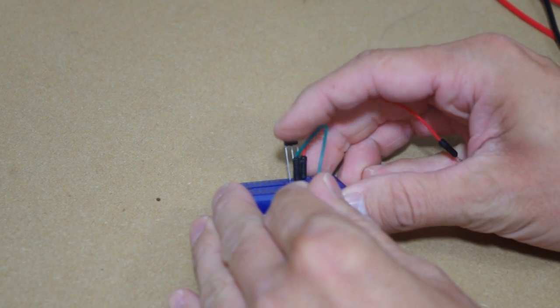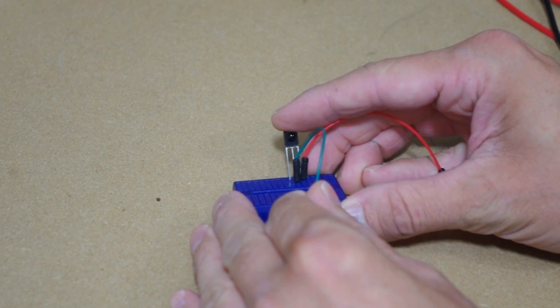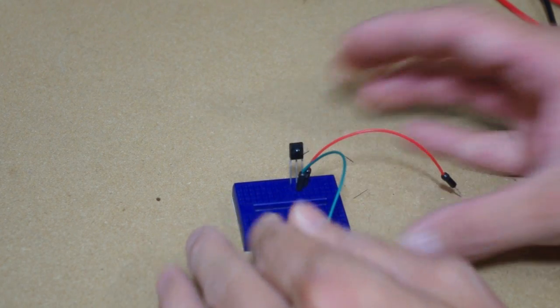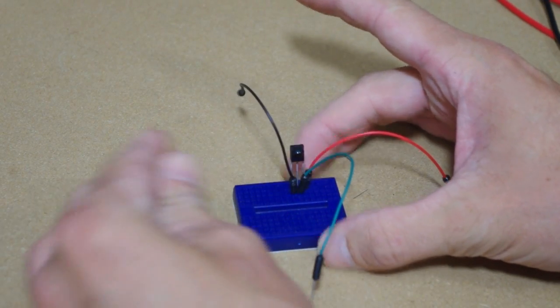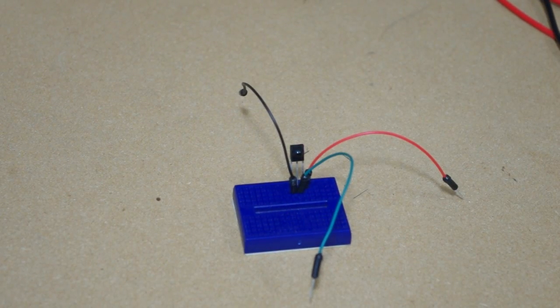The pin on the right, which is pin number three, is plus five volts, and the pin on the left is your data or your output pin.